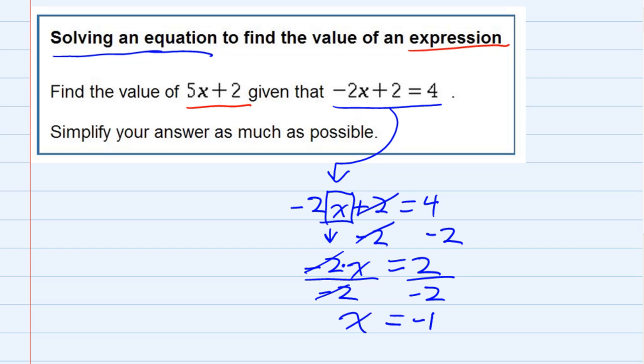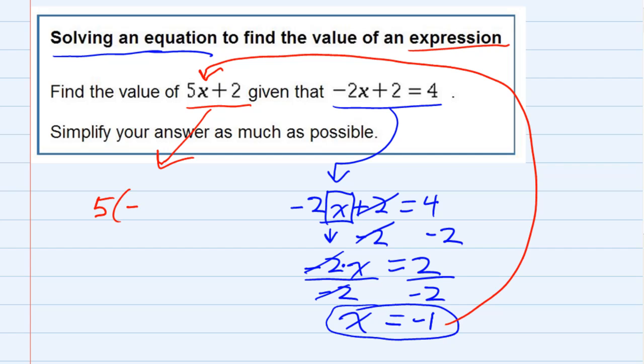We've done the first part of the problem, and that is we've solved the equation. But now we need to do the second part, which is take that value and plug it back in to evaluate the other expression. So I'm going to replace x with negative 1, so it's 5 times negative 1 plus 2.